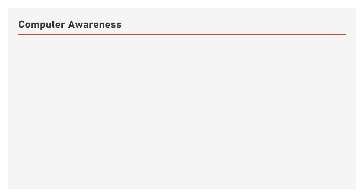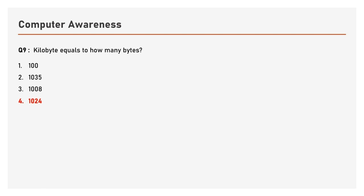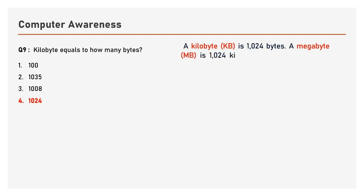Question number 9: A kilobyte equals how many bytes? Options are 100, 1035, 1008, 1024. The answer is 1024. A kilobyte is 1024 bytes.